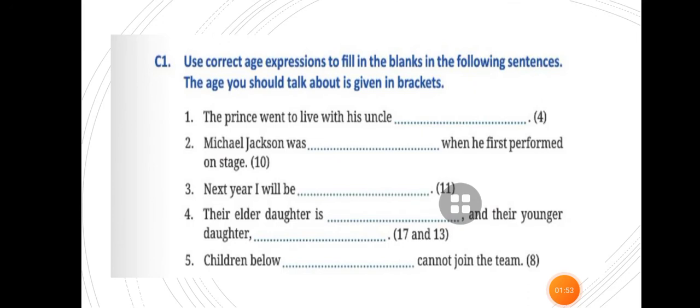Next exercise: use correct age expression to fill in the blanks in the following sentences. The age you should talk about is given in brackets. The prince went to live with his uncle at the age of 4. Michael Jackson was dash when he performed on stage. Michael Jackson was 10 years old. Next year, I will be 11 years old. Their elder daughter is 17 and their younger daughter is 13 years old. Children below 8 cannot join the team.